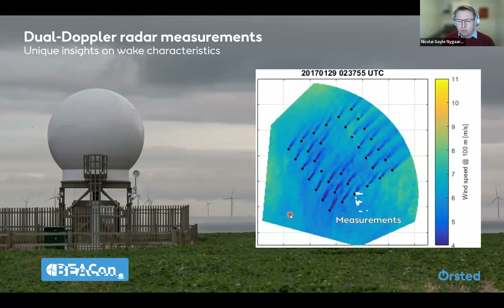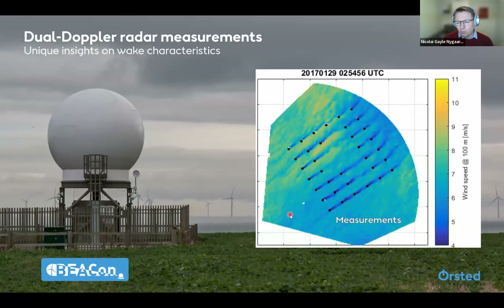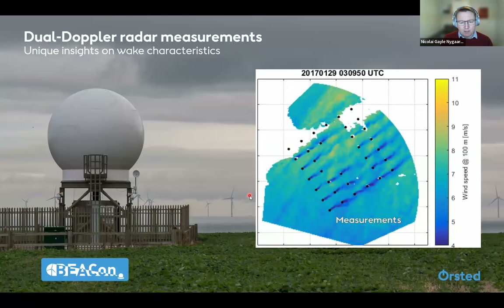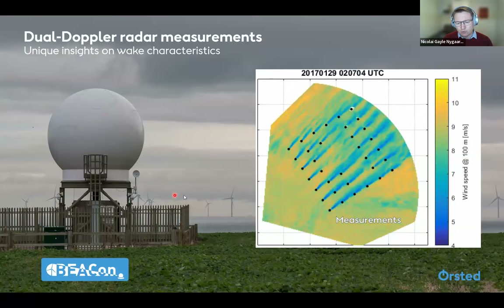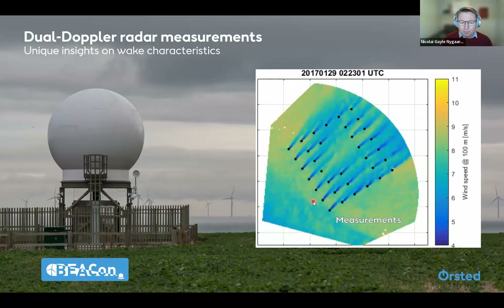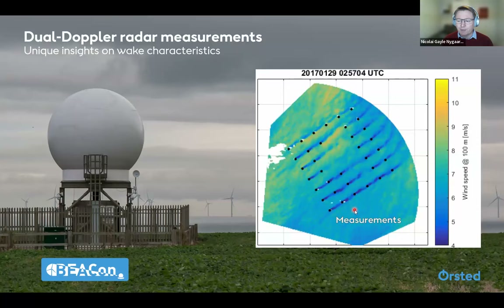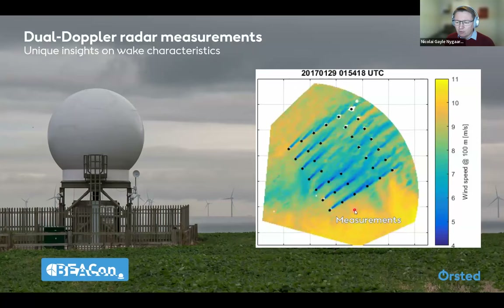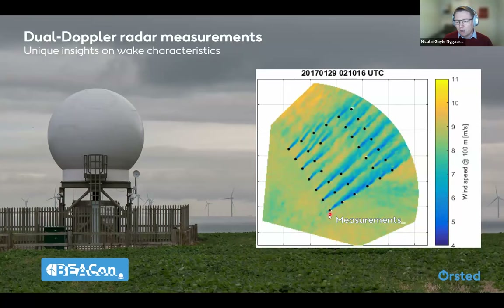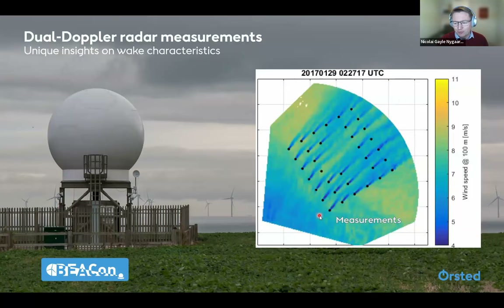What you're seeing here are measurements of wakes flowing through one of our UK wind farms, captured using dual-Doppler radars. The dots represent turbine positions, and the colors show wind speed at hub height — 100 meters. Each frame is one minute of real time. You can see the wakes as shadow tails of lower wind speed — the blue colors — just as Ken described.